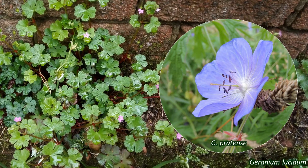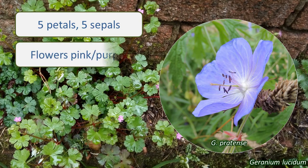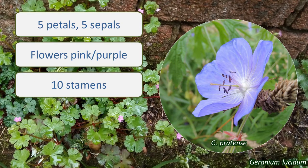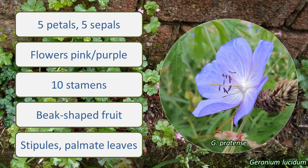So, if the plant you're looking at has open five-petalled flowers in pink or purple, with ten stamens in two whorls, dry fruit in the shape of a beak, and stipules at the base of the palmate or pinnate leaves, then it's probably in the Geraniaceae.